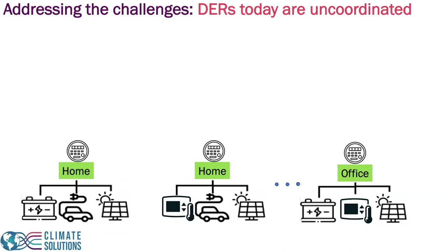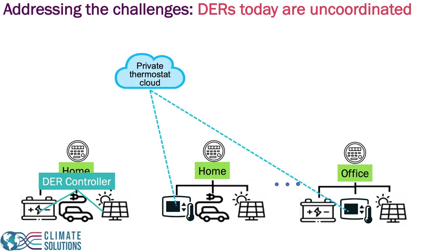Today, DERs are mostly uncoordinated — they don't operate together towards adding demand flexibility. There are some exceptions. For example, within some homes or commercial buildings with solar and storage, there is coordination to store excess solar power and use it when electricity prices from the grid are high. Also, there exist some demand response programs operated by utility companies that aim to control HVACs and other large electricity-consuming devices to reduce peak demand on the grid a few days of the year.